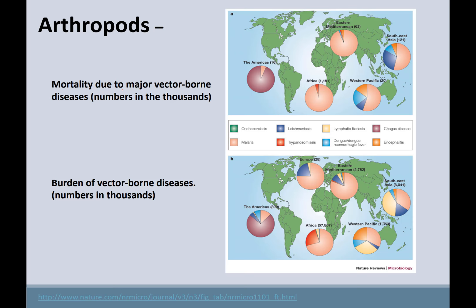This slide shows mortality due to major vector-borne diseases and their socioeconomic burden. In the Americas, Chagas disease is the biggest one; malaria dominates in the rest of the world. These infections keep people out of the workforce and put a burden on the healthcare system. We're looking at arthropods not as pathogens themselves but as vectors for transmitting these pathogens.